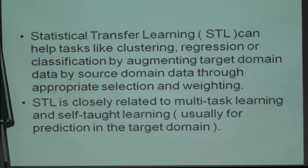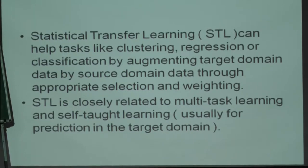The important point is that we carry out a task in the target domain using a data set following some assumed joint distribution. This data set can be augmented by data sets from other source domains through appropriate selection and weighting. That is statistical transfer learning, and it is closely related to multi-task learning, usually for prediction of features in the target domain.